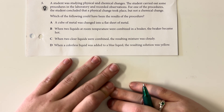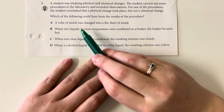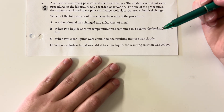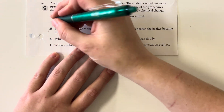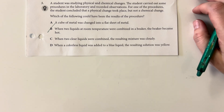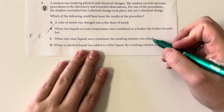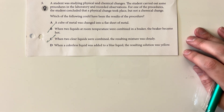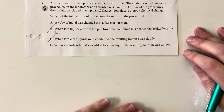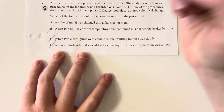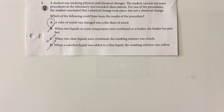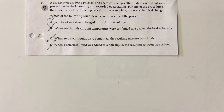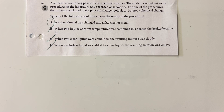Option A: a cube of metal changed into a flat sheet of metal — it is still the same metal, just a different shape, so that's a good potential answer. When two liquids at room temperature were combined and the beaker became hot, the change in temperature indicates a chemical change, not a physical one. When two clear liquids were combined and the resulting mixture was cloudy, a precipitate has been produced — also not a physical change. When a colorless liquid was added to a blue liquid and the solution turned yellow, we have a color change indicating a chemical change. So option A, the cube of metal changing into a different shape, is the best indication of a physical change rather than a chemical one.